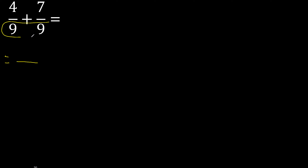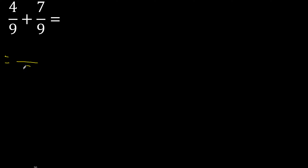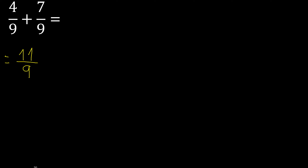Here equal number, therefore here 9. 4 plus 7 is 11, cannot be simplified. 11 is greater.